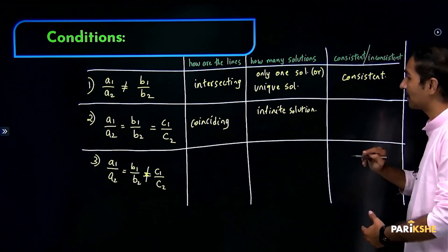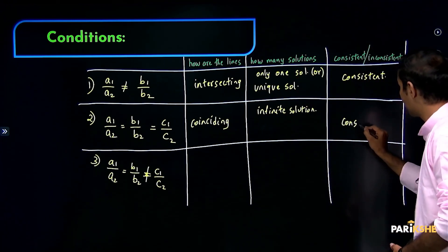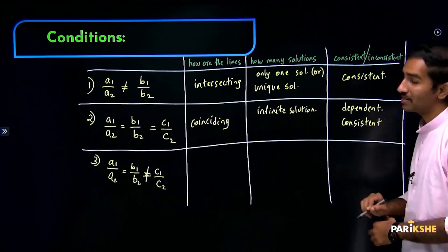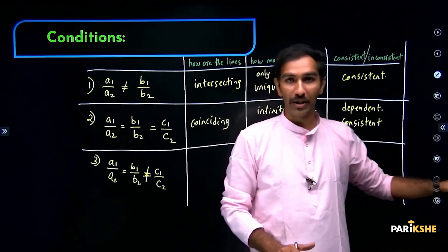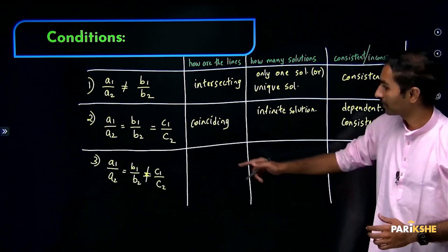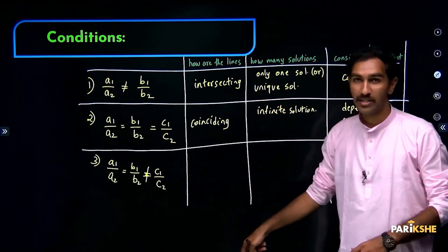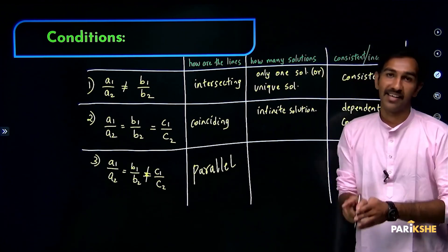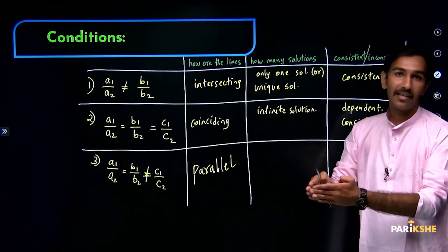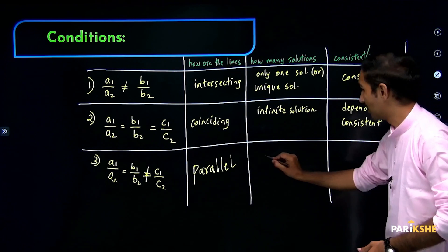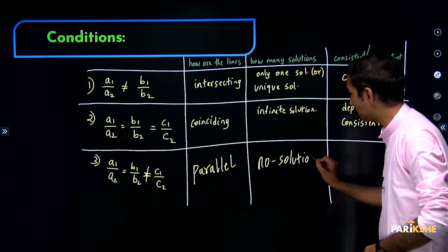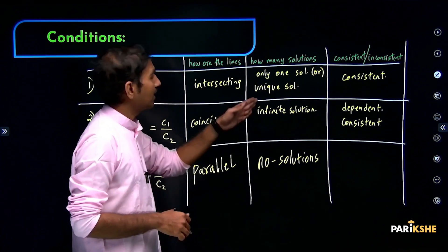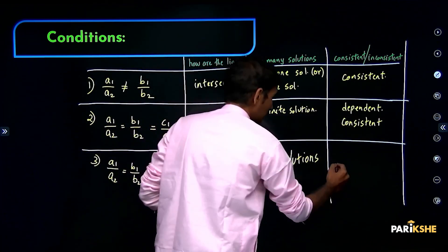Now, consistent or inconsistent. When lines are intersecting, they touch at one point — this is called consistent. When lines are coinciding, they touch at infinitely many points — this is also consistent, but dependent. When lines are parallel, they never meet — so there are no solutions. This is called inconsistent. So: intersecting = consistent, coinciding = consistent and dependent, parallel = inconsistent.